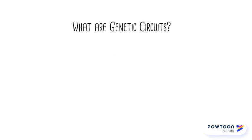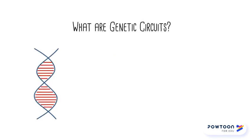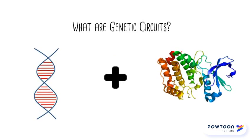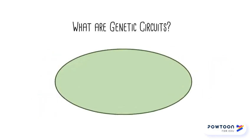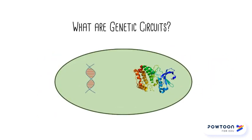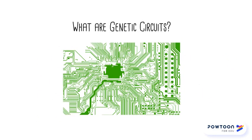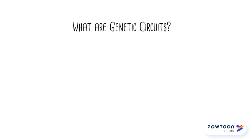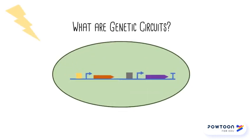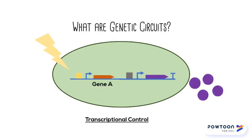Genetic circuits are a complex system of gene and protein interactions within a cell that produce a logical function, similar to what is seen in electronic circuits. It is where cells are programmed to detect a specific stimulus and initiate a response. Here we have the basic concept of a genetic circuit, known as transcriptional control, where gene A is transcribed to produce protein A to then initiate transcription of gene B to produce protein B.